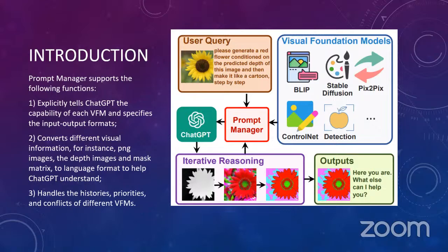The prompt manager supports some specific functions. For instance, it explicitly tells ChatGPT the capability of each Visual Foundation Model and also specifies the input/output formats. It also converts different visual information from images to language formats in order to help ChatGPT understand. For example, it uses an input image and extracts the depth of the image and also the mask matrix.